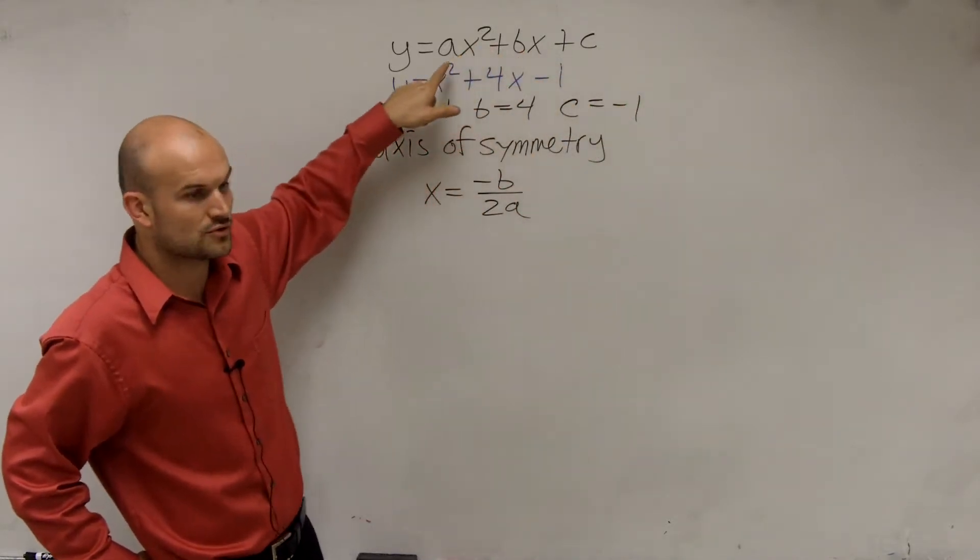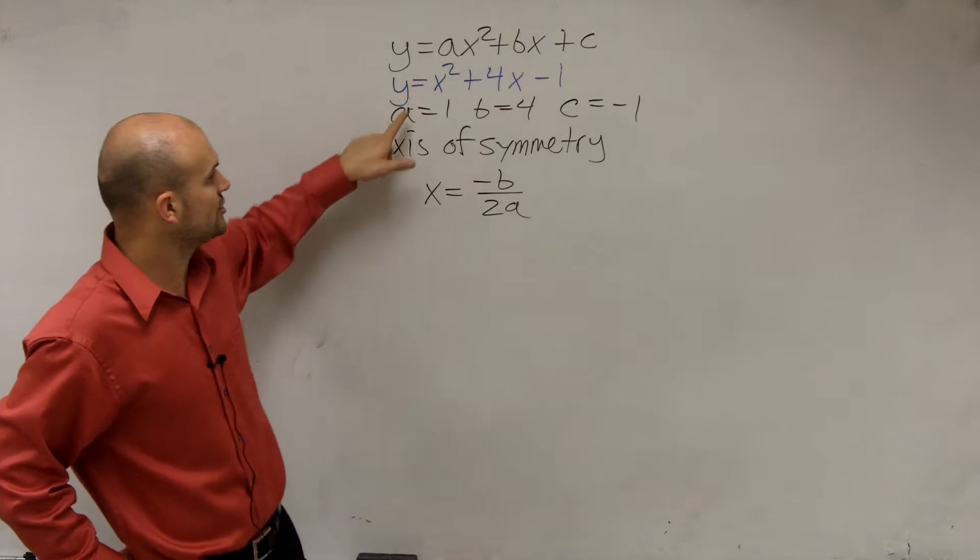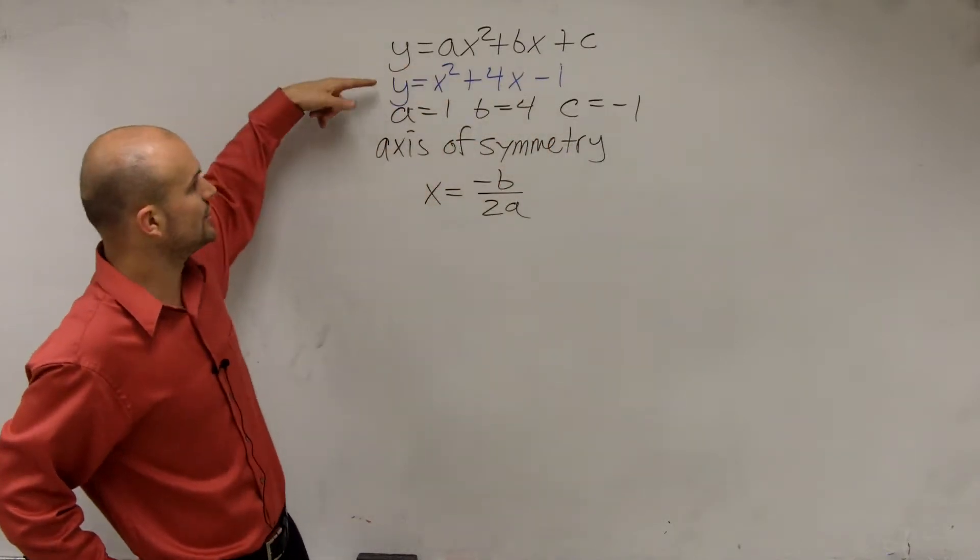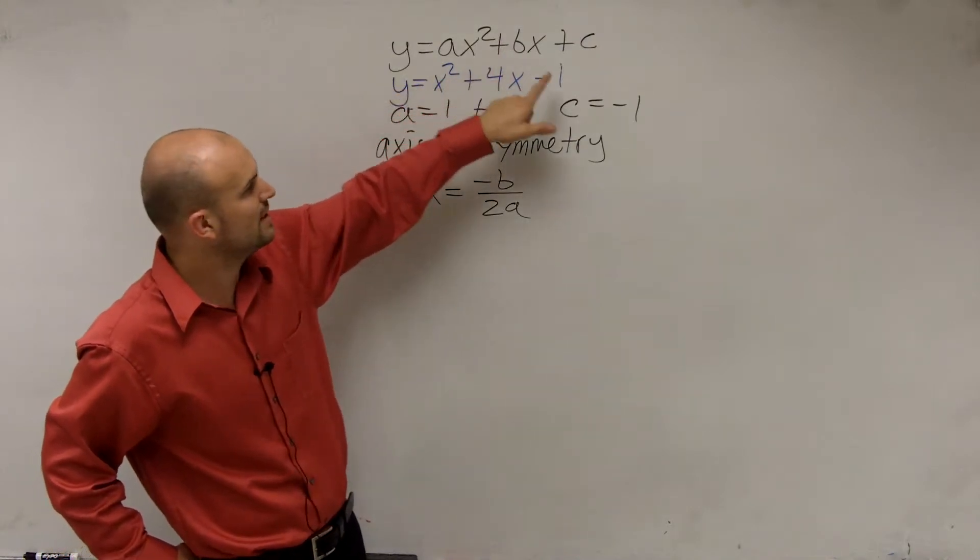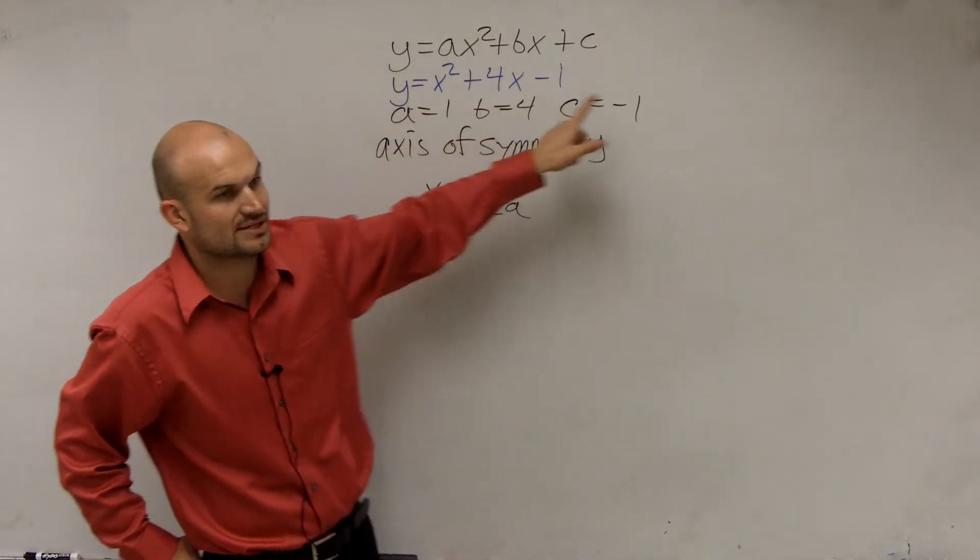The number in front, which we call the coefficient, is going to be your a, b, and c. So given your equation in the blue, I want you to tell me what is the number in front of your quadratic and linear term, and then what's your constant, which is a, b, and c.